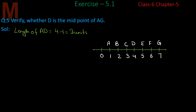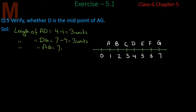We say 'units' because no scale is given — we don't know if it's centimeters or inches. Now the length of DG: G is at 7 and D is at 4, so DG = 7 minus 4 = 3 units. And AG = 7 minus 1 = 6 units.